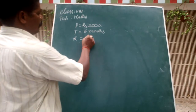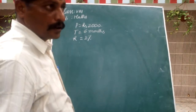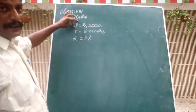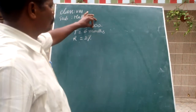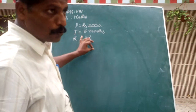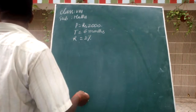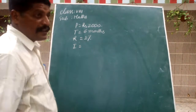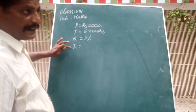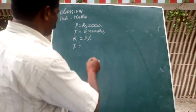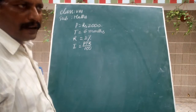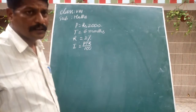Rate of interest equals 2%. So to recap: P means principal — 2,000 rupees; T means time — six months; R means rate of interest — 2%. Now, I means interest, and the formula to find interest is I equals PTR by 100.